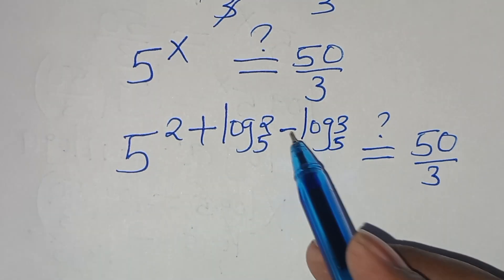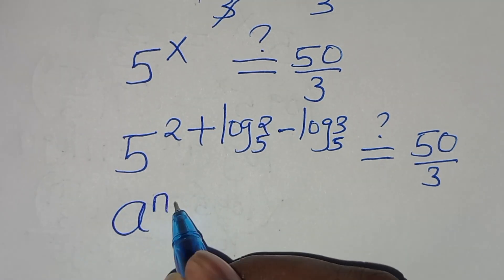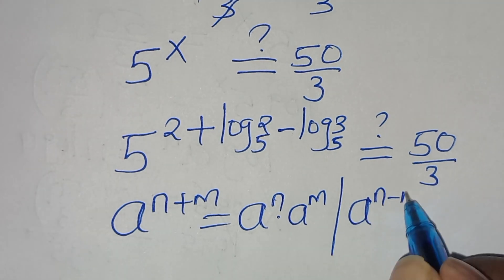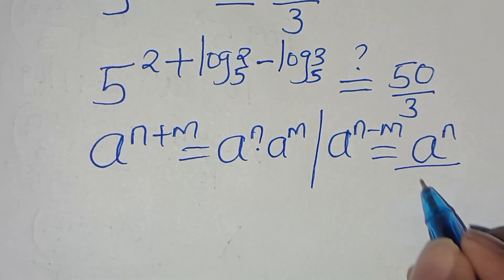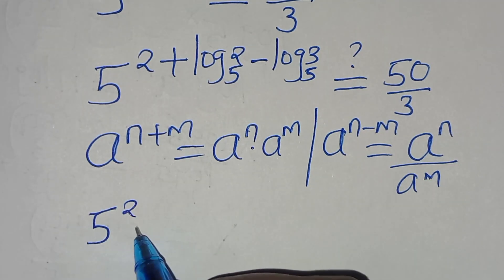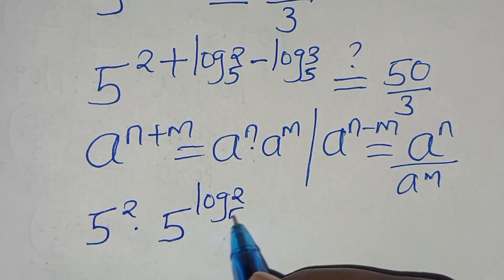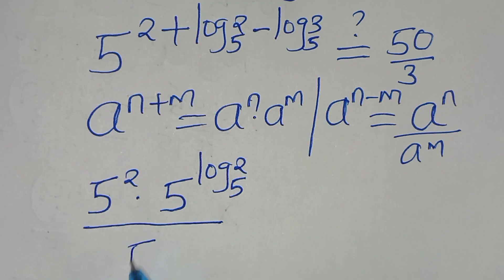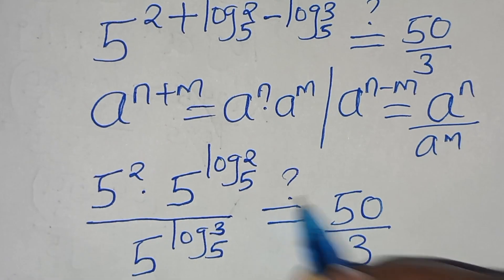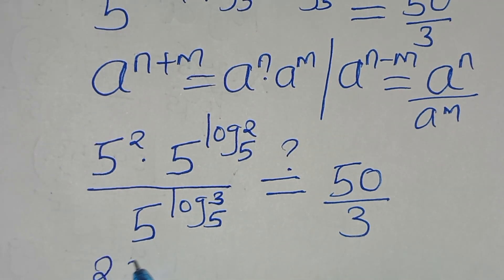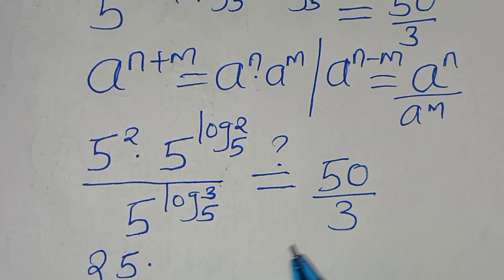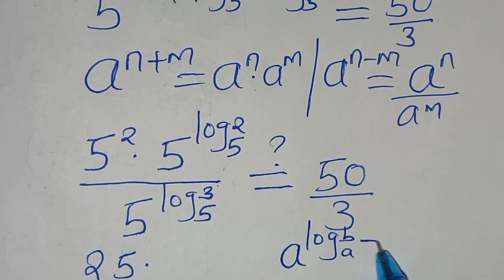So 5 to the power of 2 plus log₅(2) minus log₅(3) is in the form of a to the power of n plus m, which we can express as a to the power of n times a to the power of m. Applying these two exponent properties, here we have 5 to the power of 2, times 5 to the power of log₅(2), divided by 5 to the power of log₅(3). Now, 5 squared is equal to 25. And 5 to the power of log₅(b) is essentially equal to b.